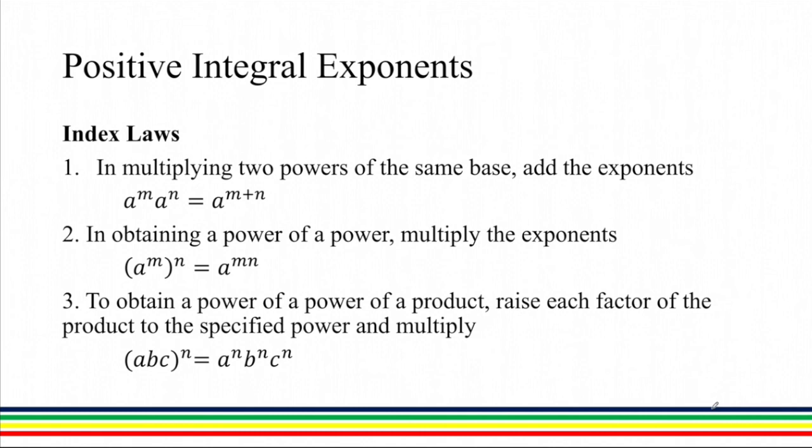For power of a power, that means a certain base is raised to a power and then raised to another power. We have a raised to m raised to n. We can just multiply the exponents. That's m times n.